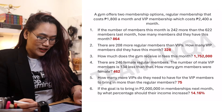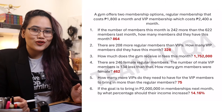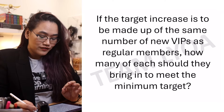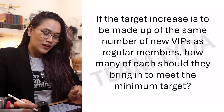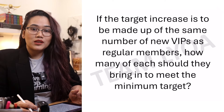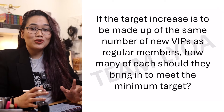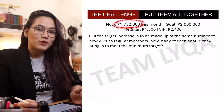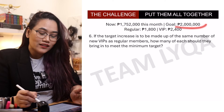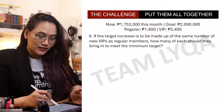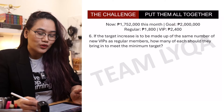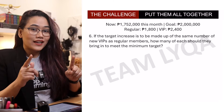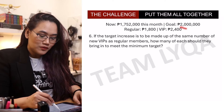So again, Part 6 — multiple concepts. We already solved the first 6 questions in our other videos. Today, our question is this: if the target increase is to be made up of the same number of new VIPs as regular members, how many of each should they bring in to meet the minimum target? We have a lot of information pulled from the earlier questions. Their current income is 1,752,000. The goal is 2 million pesos. The regular member fee is 1,800 and the VIP fee is 2,400. The number of each must be equal in order to reach 2 million pesos.